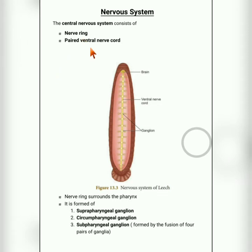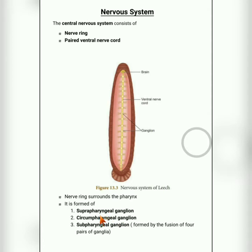The paired ventral nerve cord extends throughout the body. The nerve ring is made up of three types of ganglion: suprapharyngeal, circumfaryngeal, and subpharyngeal. The subpharyngeal ganglion is formed by the diffusion of four pairs of ganglia — remember this for your exam.